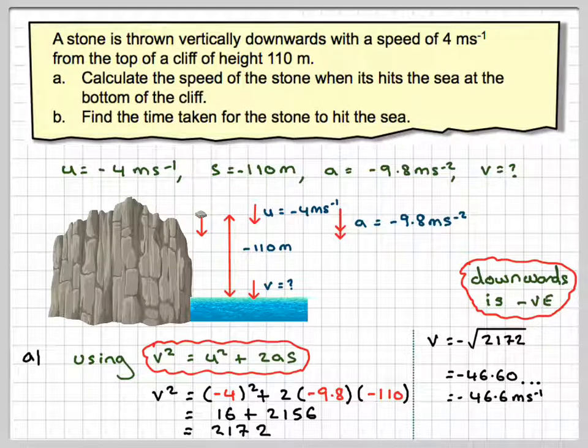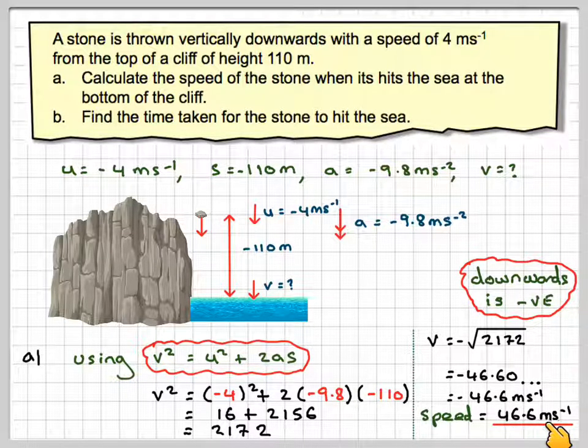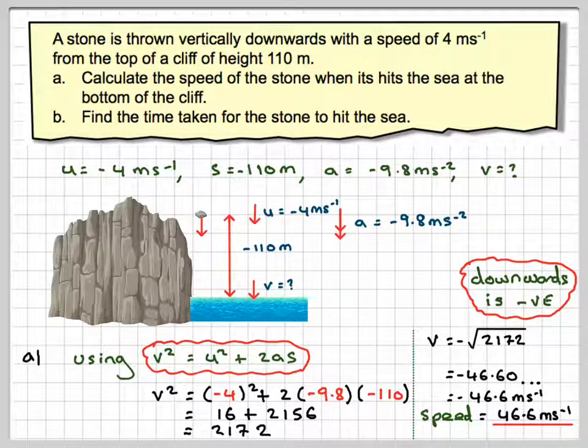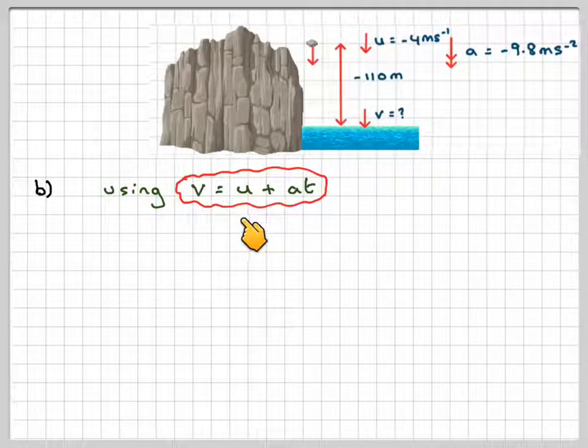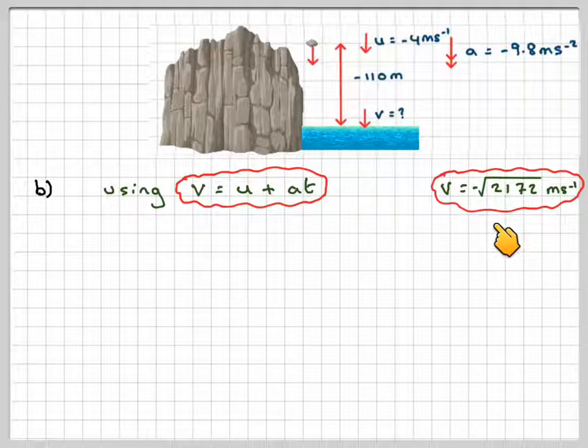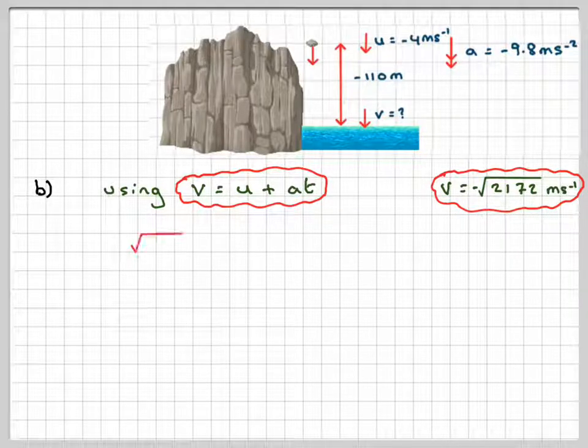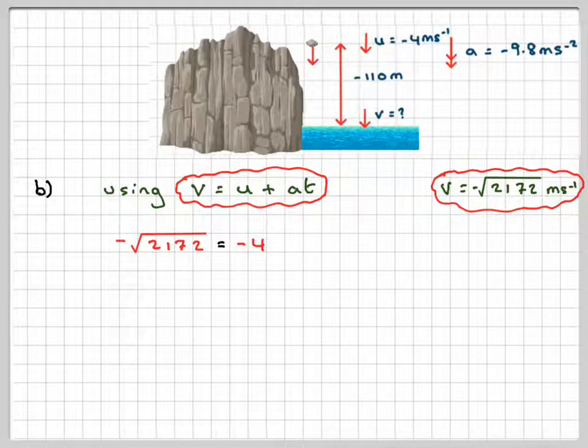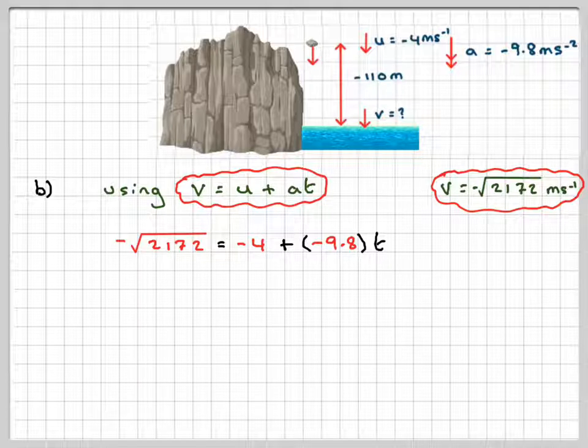But we want speed, so we don't need to worry about the minus sign. So speed will be 46.6 metres per second. Now we need to find the time taken for that journey. So using v = u + at, where v will be -√2172, is equal to u, which is -4, plus -9.8 times t.